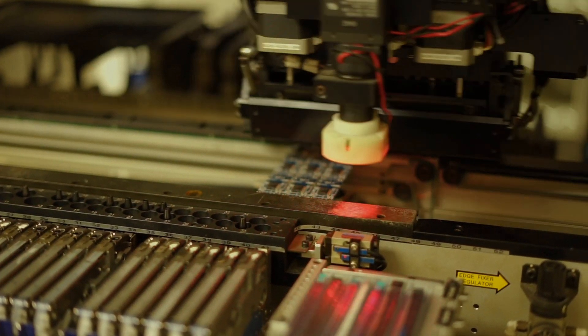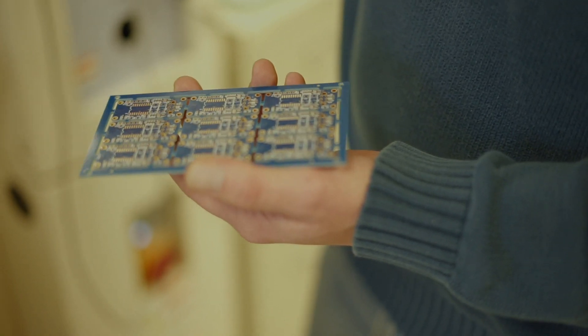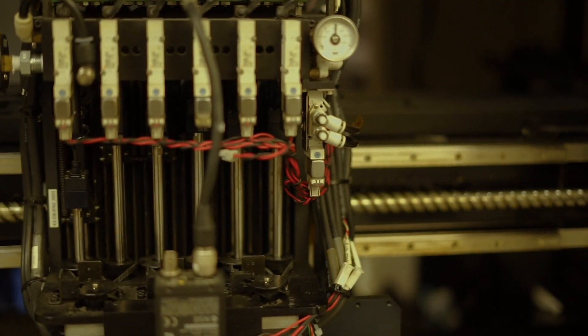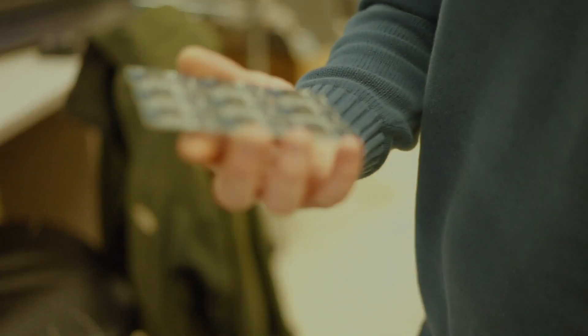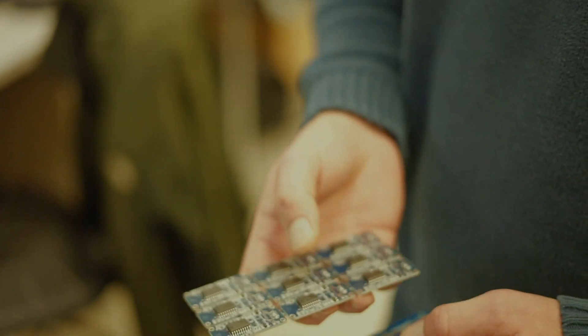It comes out of the conveyor over here. We put it in the reflow oven. And what comes out is, well, it's complete as far as the surface mount stuff goes, a circuit board. That's where all of our autopilots come from.